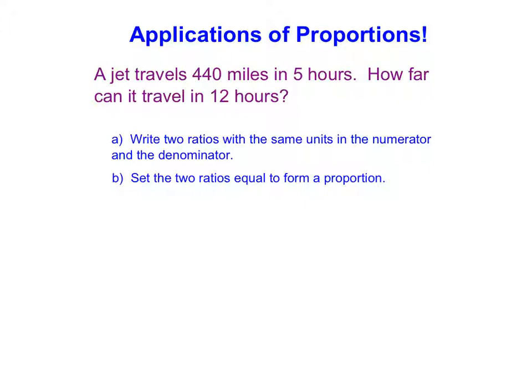So here it says a jet travels 440 miles in five hours. We're going to write two ratios with the same units in the numerator and the denominator. So it doesn't matter how you write them, it just matters that you're consistent. So here I'm going to say, I traveled 440 miles in five hours.